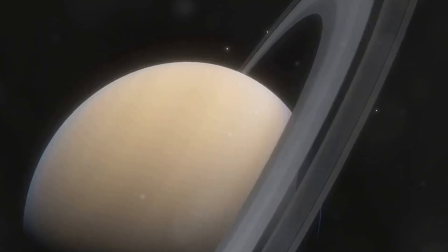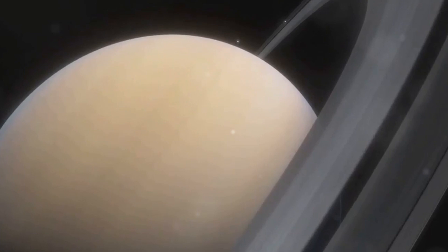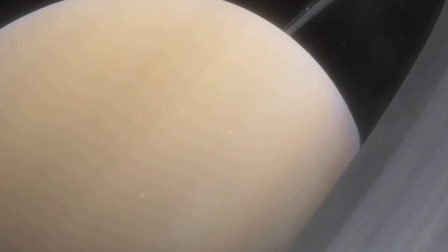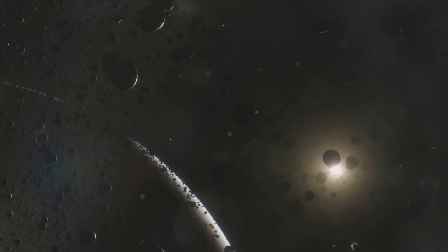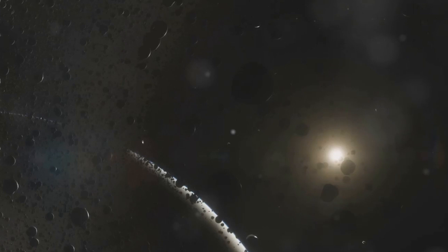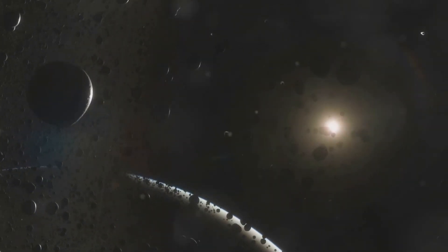Each planet has its own unique characteristics, from the ringed beauty of Saturn to the fiery surface of Venus. Planets can be rocky like Earth and Mars, or gaseous like Jupiter and Saturn. Some even have moons of their own, with Jupiter boasting an impressive 67 known moons. From the fiery stars to the cold, silent planets, each celestial body tells a unique tale in the cosmic narrative.